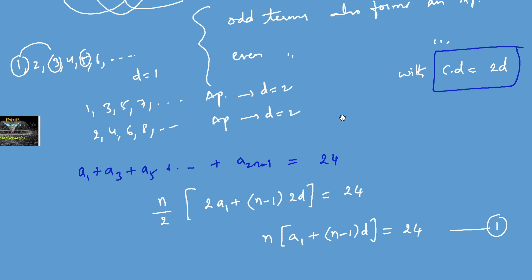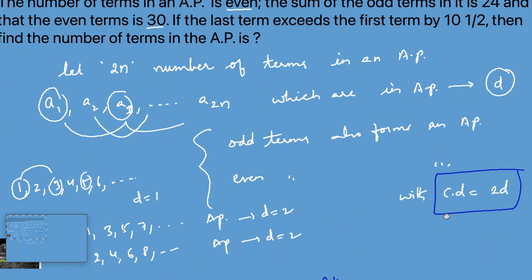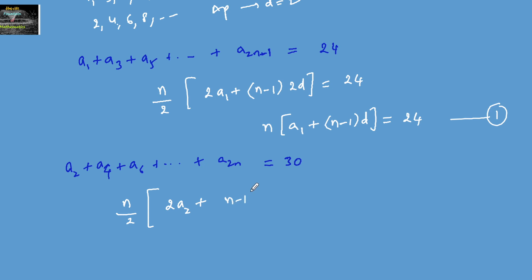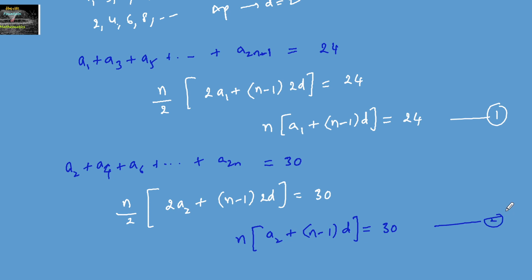The sum of the even terms a2, a4, a6, ..., a(2n) is 30. There are n even terms, so: n/2 × [2a2 + (n-1)×2D] = 30, which simplifies to n × [a2 + (n-1)D] = 30. Call this Equation 2.